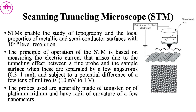Scanning Tunneling Microscopes enable the study of topography and the local properties of metallic and semiconductor surfaces with 10⁻¹⁰ meter level resolution. The principle of operation of the STM is based on measuring the electric current that arises due to the tunneling effect between a fine probe and the sample surface when these are separated by a few angstroms and subject to a potential difference of a few tens of millivolts. The probes used are generally made of tungsten, platinum, or iridium and have a radius of curvature of a few nanometers.